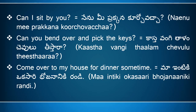'Can you bend over and pick the keys?' means 'kasta vanggi, talam chavulu tese tara.' Here, 'can you bend' means 'kasta vangu tara,' 'and' means 'maryu,' and 'pick the keys' means 'talam chavulu tese tara.' We don't use the meaning of 'and' as 'maryu' here. Instead, we use the past participle form of the verb 'bend,' which is 'vanggi.' So the past participle form of 'bend' is 'vanggi.'